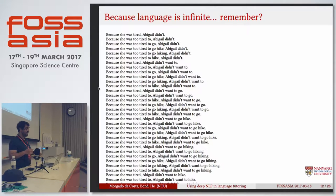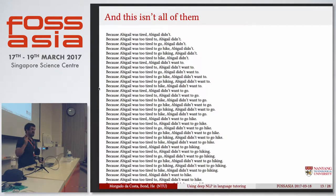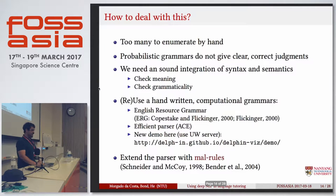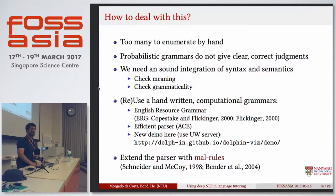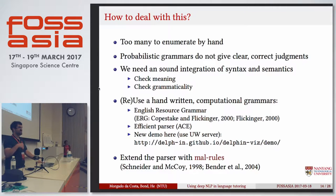You're thinking, how many more slides of sentences does he have to show us — just one more. As long as you get the point that this is not all of them, I could go on forever and ever. So how to deal with this? We don't want to enumerate them. We know that probabilistic grammars are fun to work with, but if you're teaching language to fifth or sixth graders, you probably don't want to go that way. You cannot deal with 80% correct grammar on sentences that you want to teach students.